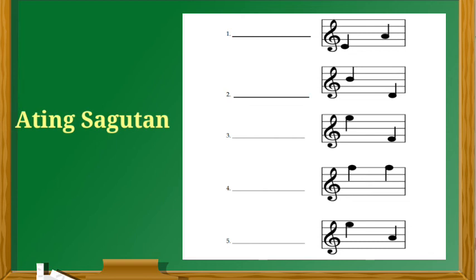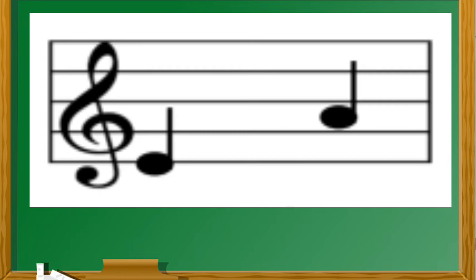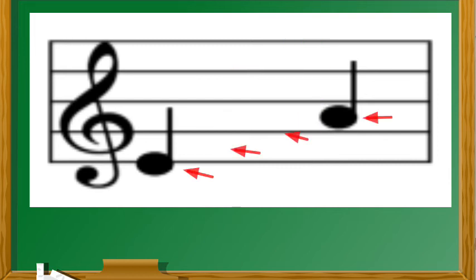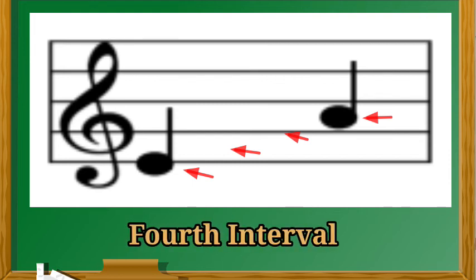Ngayon, ating sagutan ang mga sumusunod na tunog sa patlang. Bibigay lamang kung anong uri ng interval ang bawat bilang. Para makuha natin ang tamang sagot, bilangin natin ang bilang ng kuwang o space at limbguhit sa staff. Isa, dalawa, tatlo, apat. Ang tamang sagot ay fourth interval.